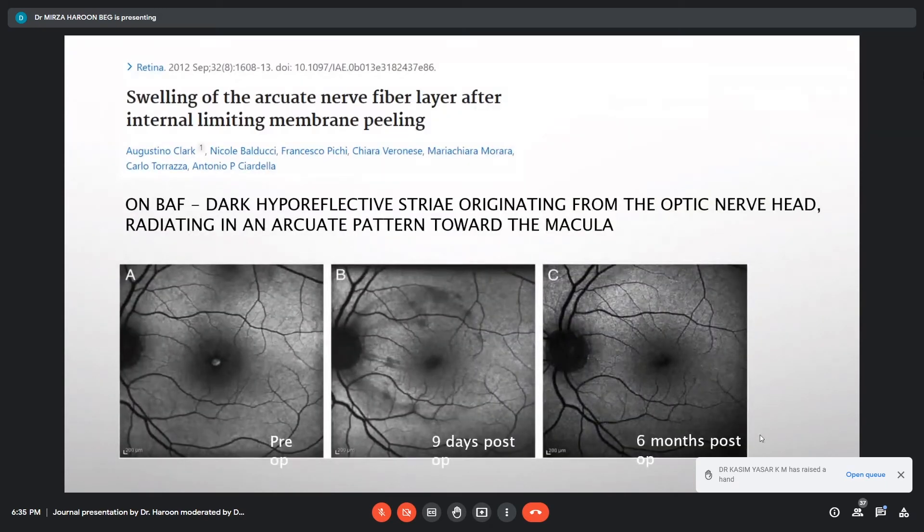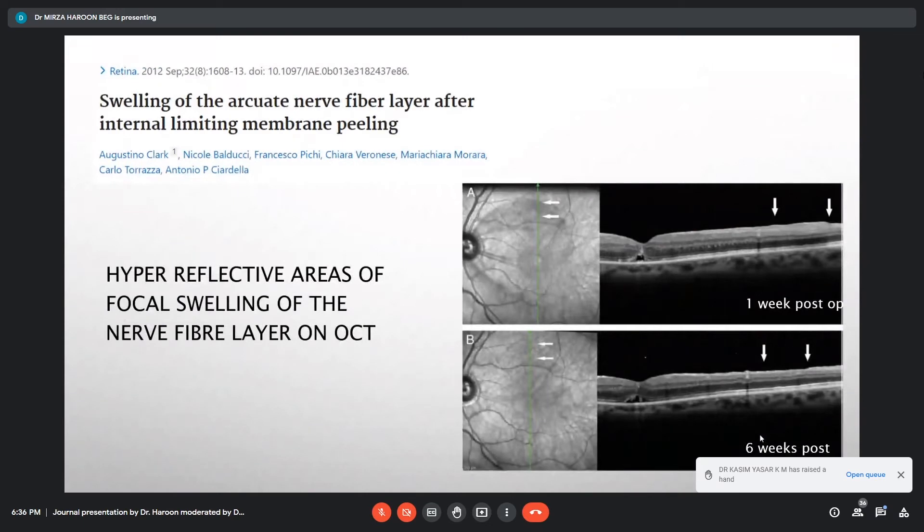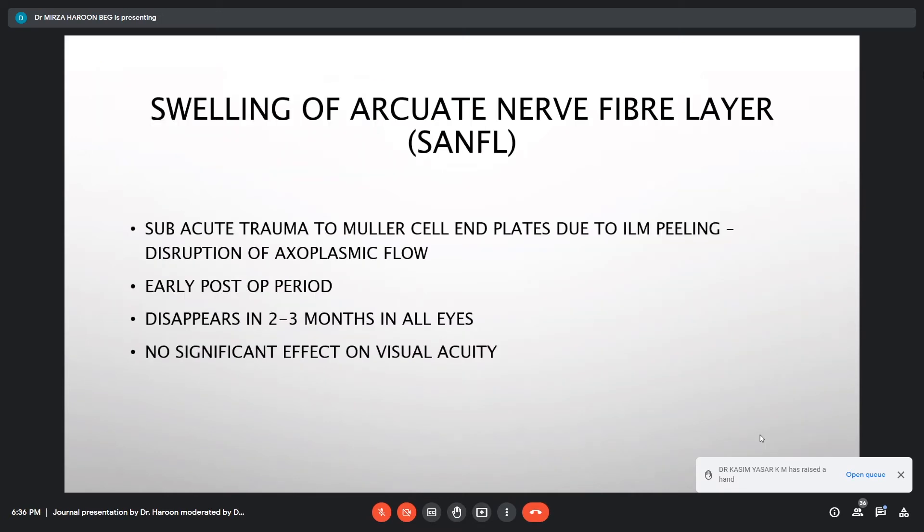A similar feature was seen in ILM peeled eyes, which was called swelling of the arcuate nerve fiber layer, or the short form used as SANFL. This was seen in the immediate postoperative period. On blue autofluorescence, dark hyperreflective striae originating from the optic nerve head were seen radiating in an arcuate pattern towards the macula. This was seen in initial post-op days, but after 6 months, this feature disappeared. In OCT scans, there was a hyperreflective area or swelling in the inner retinal layer. So to differentiate between the two, this was because of subacute trauma to Müller cell footplate due to ILM peeling, causing disruption of axoplasmic flow. It disappeared in 2-3 months in all the eyes and there was no significant effect on the visual acuity also.